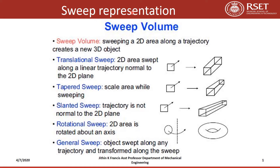Sweep representation, also called sweep volume, involves sweeping a 2D area along a trajectory to create a new 3D object. Sweep representation is used for axisymmetric objects as well as objects with uniform cross-section. For axisymmetric objects, a 2D area is swept to get a sweep representation.